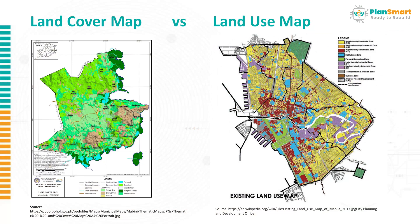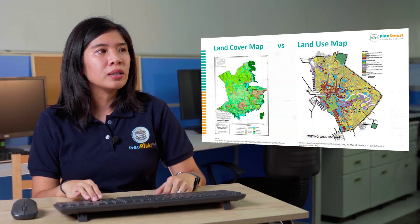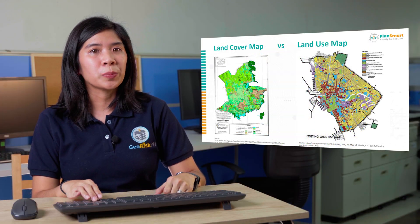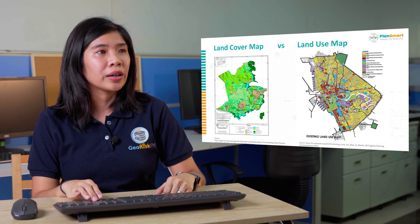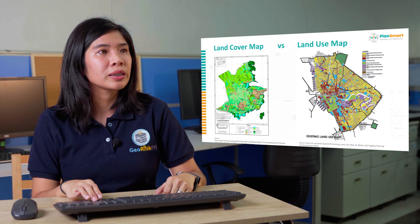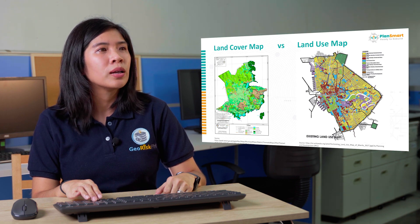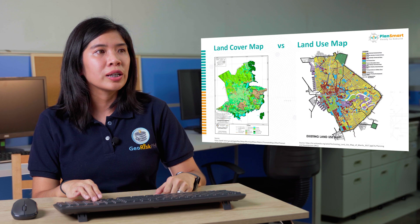On the left side, you could see the land cover of Bohol. On the right side, you can see the land use map of Manila City. As you can see, the land use map is more specific — the built-up area is classified into commercial area, residential area, institutional zone, and so on.